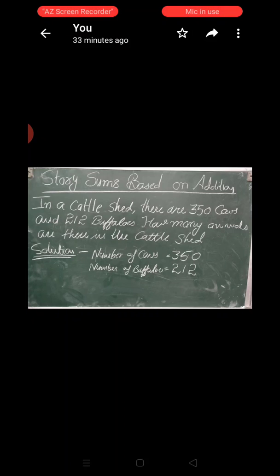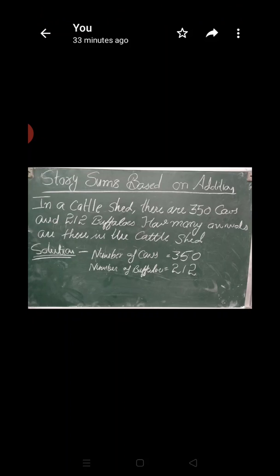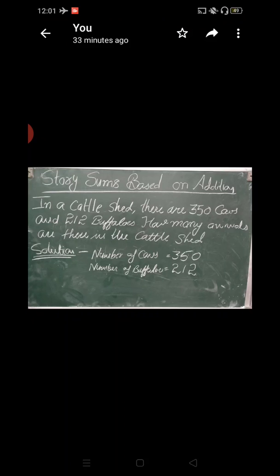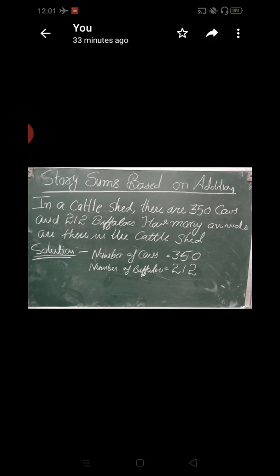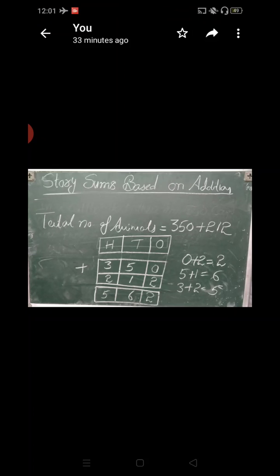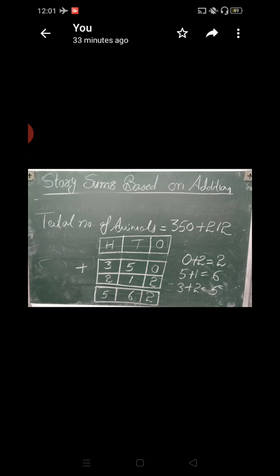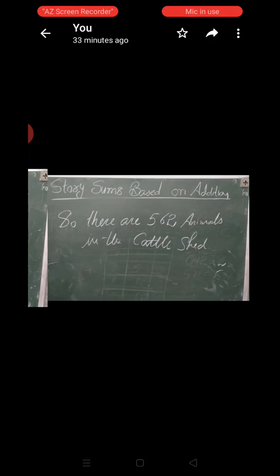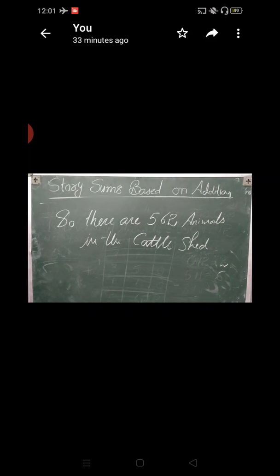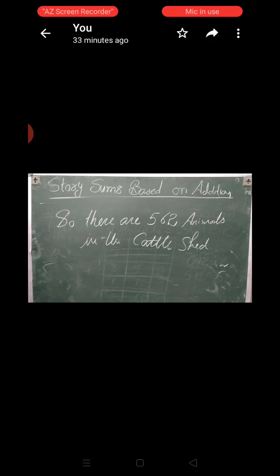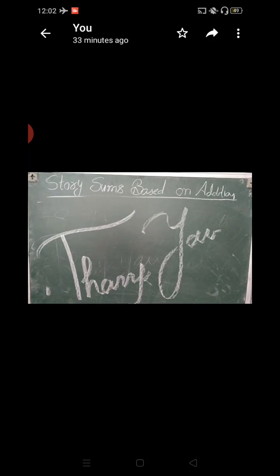Now we do story sums based on addition. In the cattle shed, there are 350 cows and 212 buffalos. How many animals are there in the cattle shed? In the solution: number of cows equals 350, number of buffalos equals 212. We add: 0 plus 2 equals 2, 5 plus 1 equals 6, 3 plus 2 equals 5. So there are 562 animals in the cattle shed. I hope you all understand the topic very well. Thank you for watching this video.